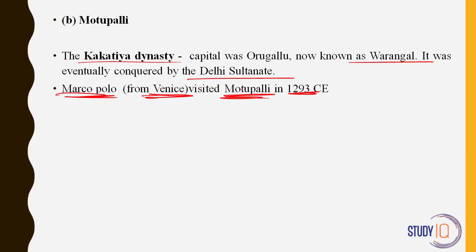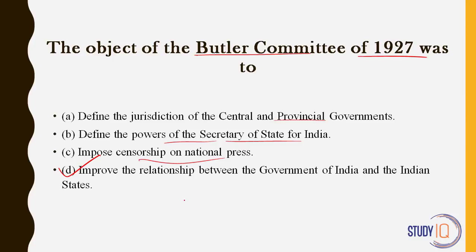Next question regarding Butler Committee of 1927. What was its purpose? Was it defining jurisdiction of central and provincial governments, defining powers of Secretary of State, censorship of press, or improving relationship between government of India and Indian states? The answer is states and government of India. This committee was sent to determine and improve the relationship between the native princely states and the British paramount power. The British were paramount power; all the princely kingdoms that had signed subsidiary alliances were subordinate under the British empire. That is why it is called the paramount power. Answer is D.